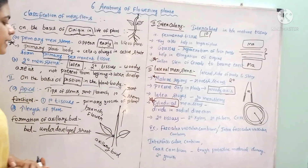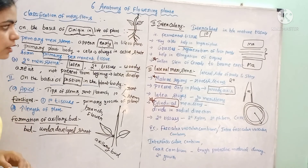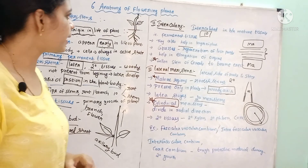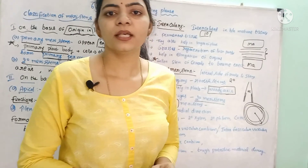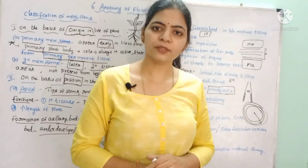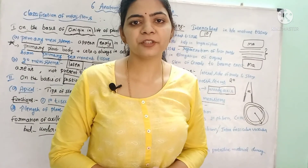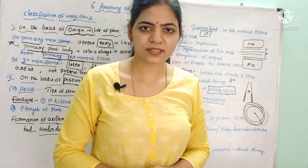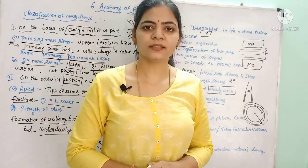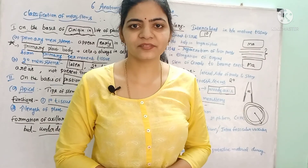This is about the different types of meristems based on their origin and their position. With this we have completed the meristematic tissue. In the next video we are going to study about the permanent tissue. If you like my video please like, share, and subscribe to my channel Latha Akula Biology Tutorial.